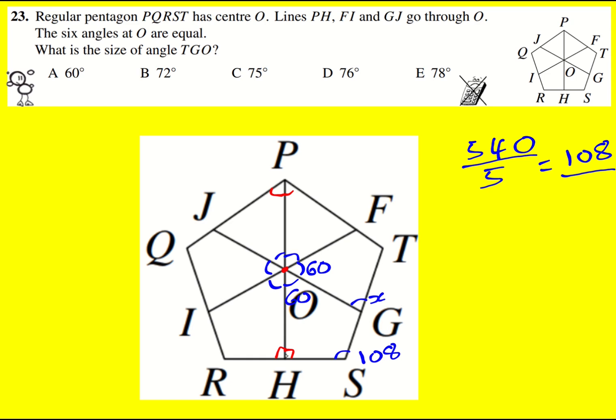So now I've got 60, 90, 108, just missing this angle here. So let me add them up. I'm going to get 60 plus 90 is 150. Add 108 onto that, which gives 258. I should write it again, 258.